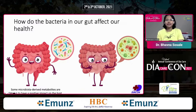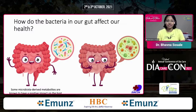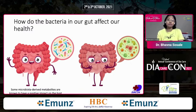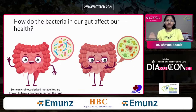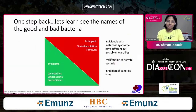What happens if the good bugs or the bad bugs increase in numbers? Irrespective of what kind of microbiota we have inside us, these microbiota produce different metabolites. When they produce metabolites that are good for our health, we call them good bugs — so we have a healthy gut. On the other hand, if the bacteria are producing metabolites which have a negative impact on the host's health, we call them bad bugs — so this is an unhealthy gut.